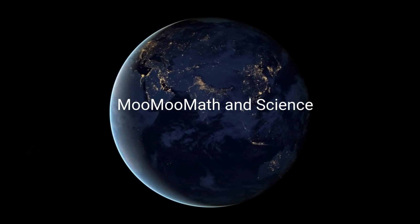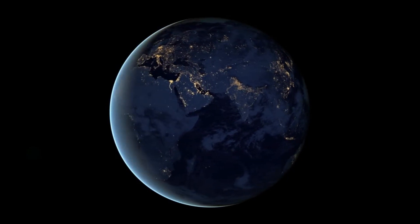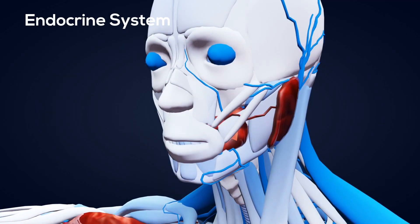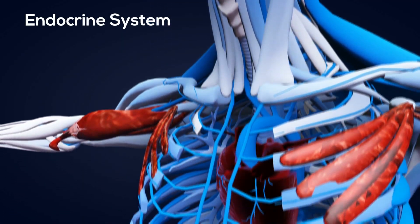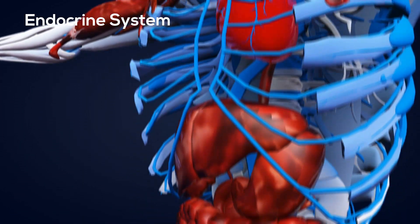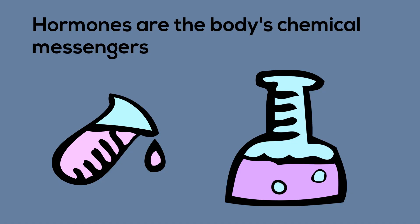Welcome to Moo Moo Math and Science. In this video I would like to talk about several glands of the endocrine system. The endocrine system sends chemical messages throughout your body using chemical signals called hormones.